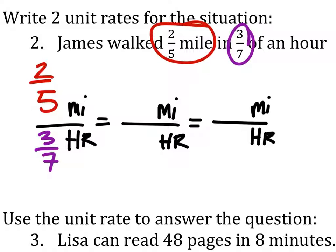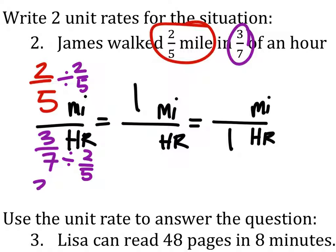Since it wants two unit rates, we need the miles to be one, and we need the hours to be one. So let's do one mile per how many hours, which is a little backwards, but that's okay. How would we do that? We would take this two-fifths and divide it by two-fifths. But if we do it to the numerator, we must do it to the denominator as well to get an equivalent fraction. So we divide three-sevenths by two-fifths, which means we take three-sevenths and multiply it by five-halves. That gives us 15-fourteenths of an hour. This is our first unit rate.